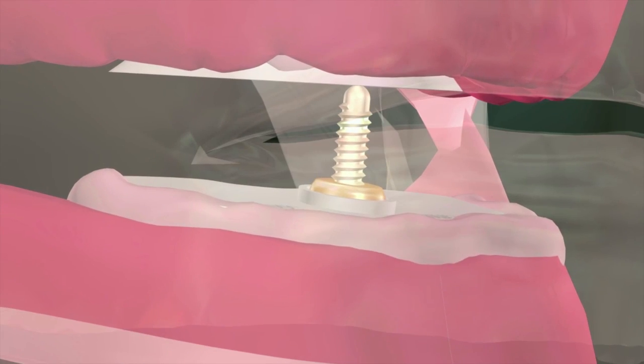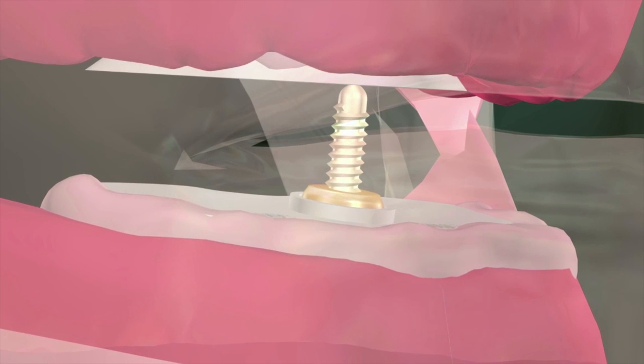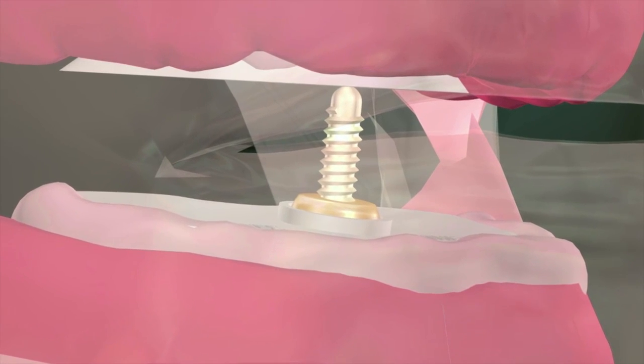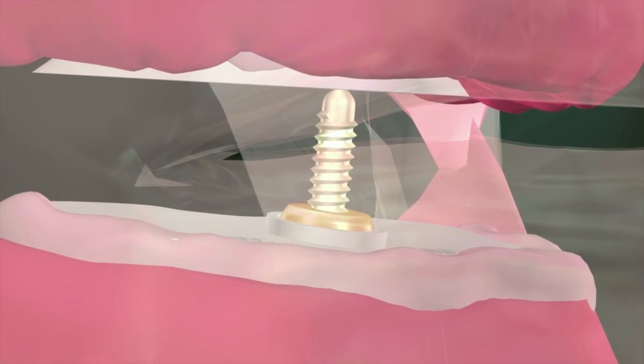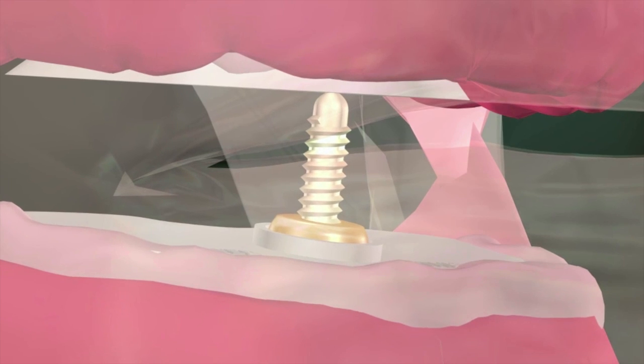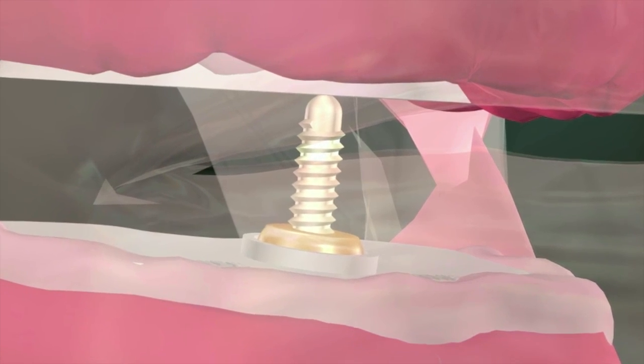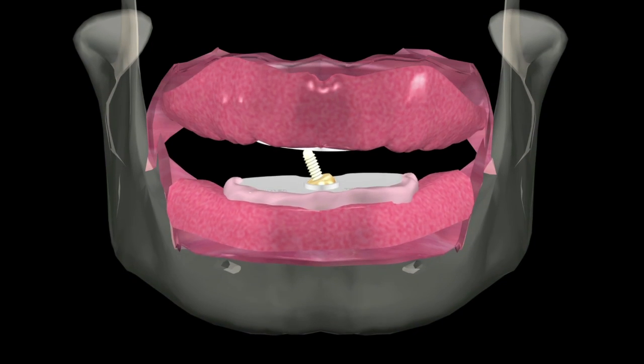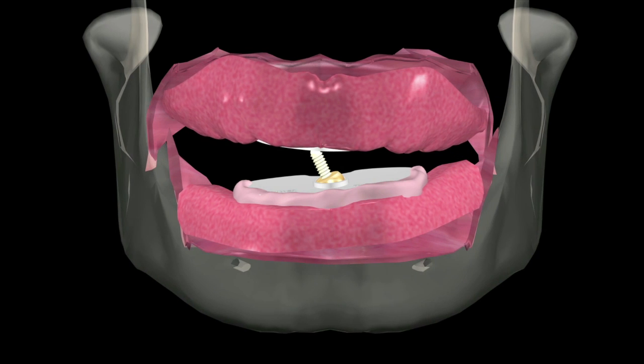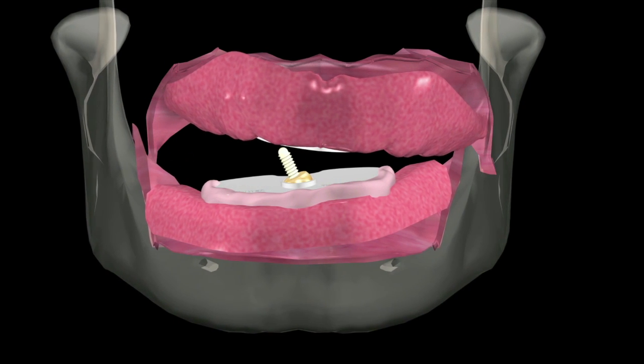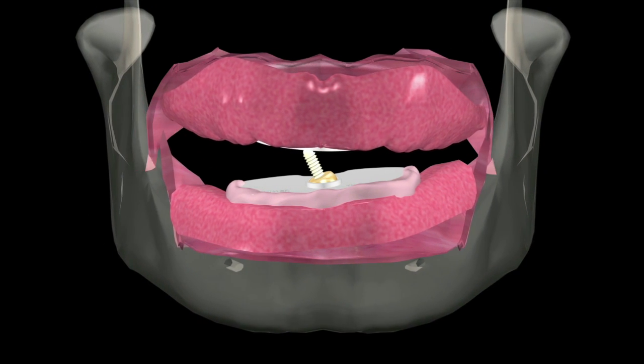A common problem among gothic arch tracing devices is that, if they are not mounted correctly, the pin will not contact the striking plate in a perpendicular relationship. When this occurs, the assembly will not stabilize the base plates. The result is a rocking motion of the plates and an incorrect centric jaw record.